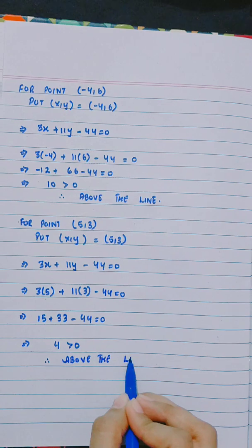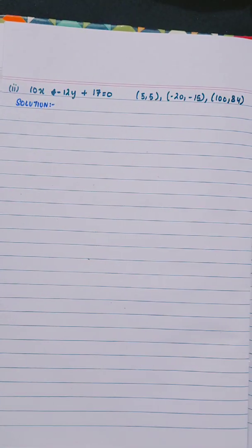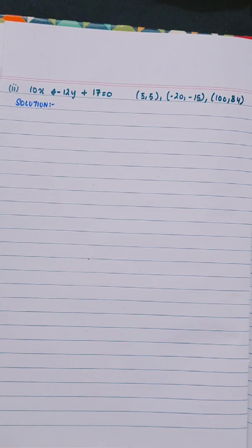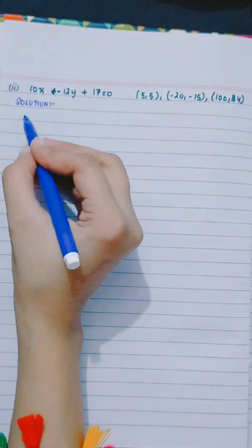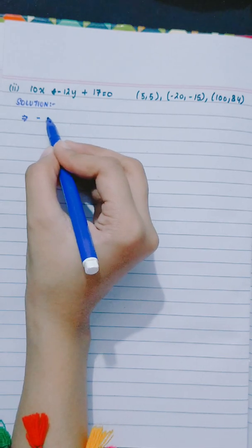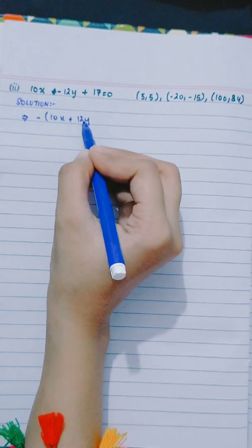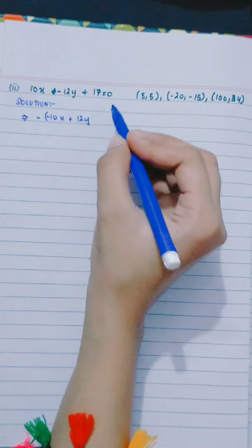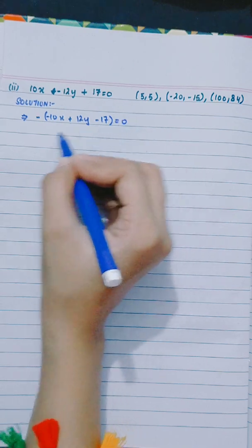Now part 2 is 10x minus 12y plus 17 equals to 0. Now we have the coefficient of y which is negative, so first of all make it positive. Take minus common, so this will be -10x plus 12y minus 17 equals to 0.